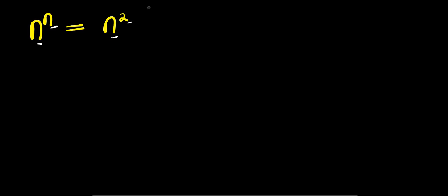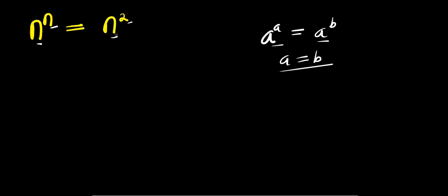The first step will be to compare. If you have a to the power a equals a to the power b, since the bases are the same, you can have a equals b. So for n power n equals n power 2, we can say that n equals 2 by comparing the exponents, since the bases are the same.